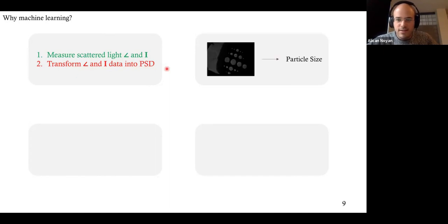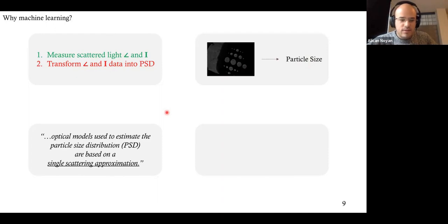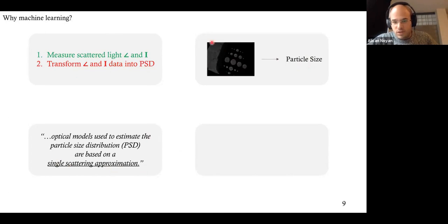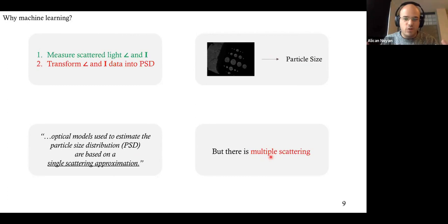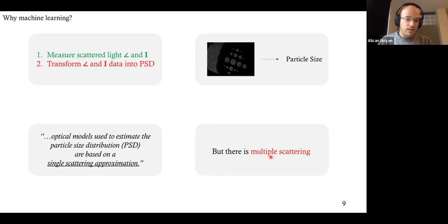The Mie scattering theory is based on the single scattering approximation. But for this setup — this filter, this sensor — we had multiple scattering. So the assumption fails. Since the concentration of particles is high, light scatters once and then once more, maybe three or four times. This is why we needed machine learning to correct this and to get the particle size information from the image.